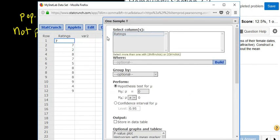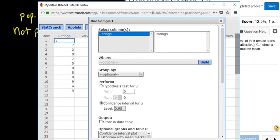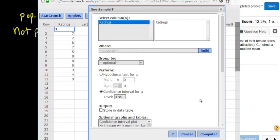Then it says ratings. You have to select the column that says ratings. And we're doing a confidence interval. And then you just click compute, which is down here.